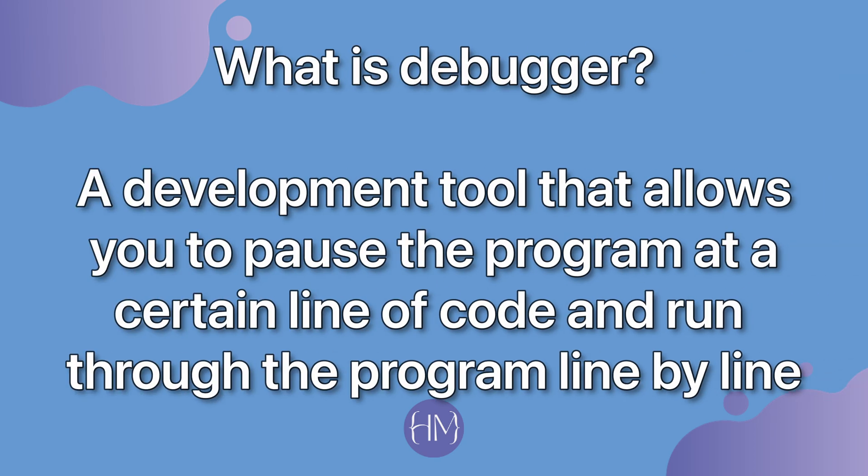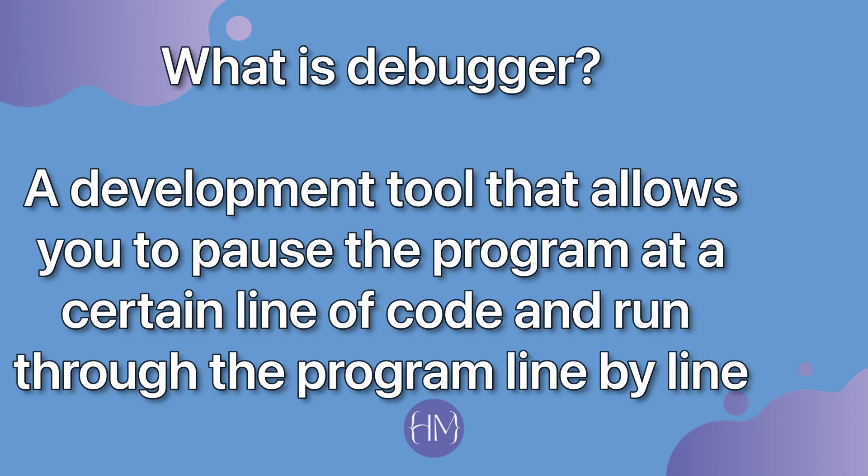So what is a debugger? A debugger is a development tool that developers use to find bugs in their code. One of the main features is that it allows you to pause a program at a particular line of code, right before it executes that line. When you pause at a certain line you can check the state of the program by looking at your variables and seeing what values they have at that point.